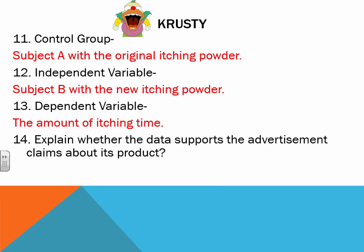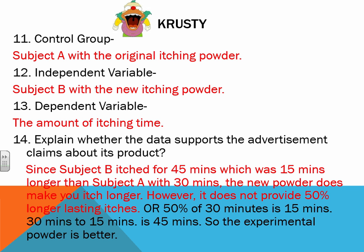Explain whether the data supports the advertisement claim about its product. Since subject B itched for 45 minutes, which was 15 minutes longer than subject A with 30 minutes, the new powder does make you itch longer. However, it does not provide 50% longer lasting itches — 50% of 30 minutes is 15 minutes, and 30 plus 15 minutes is 45 minutes. So the experimental powder is better, but does not meet the 50% claim.